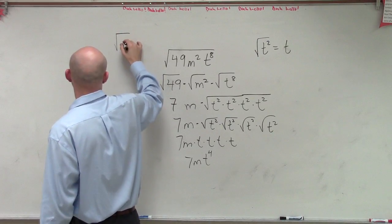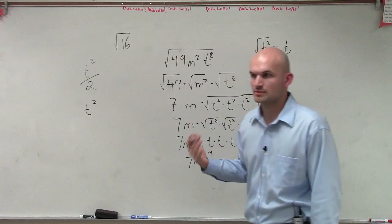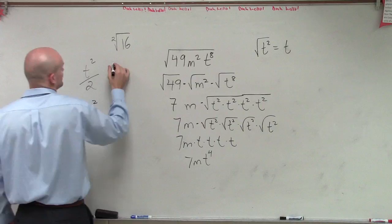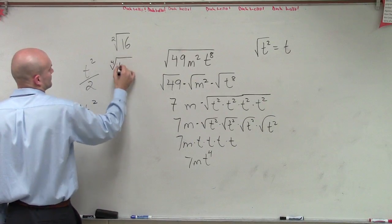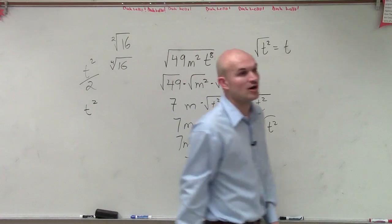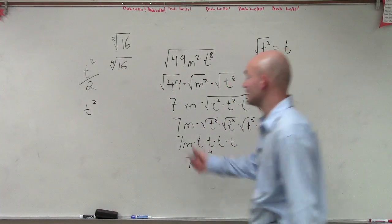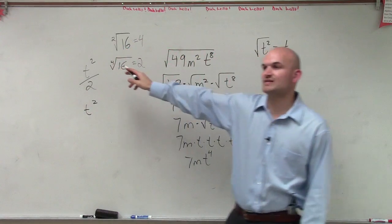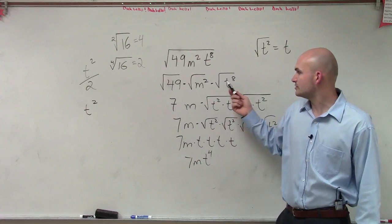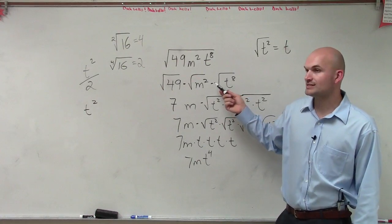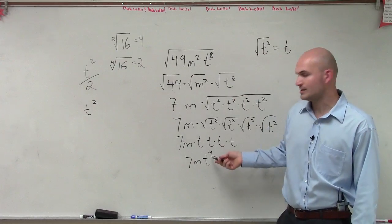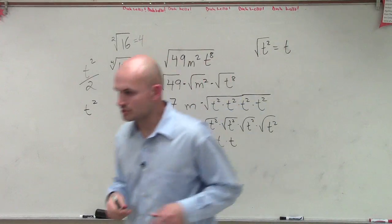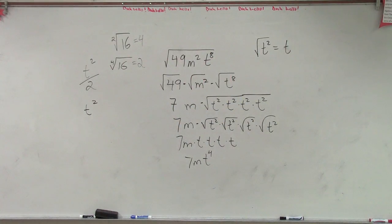For example, square root of 16: what number multiplied by itself twice gives you 16? Four. And what if I said the fourth root of 16? What number multiplied by itself four times gives you 16? That answer is 2. So whatever this index number is, that's telling you how many times you have to multiply it by itself. So for this problem, what number multiplied by itself twice gives you t to the eighth? That answer is t to the fourth. You didn't have to show all this work, but I wanted to show it so you'd have a reminder of the basics.